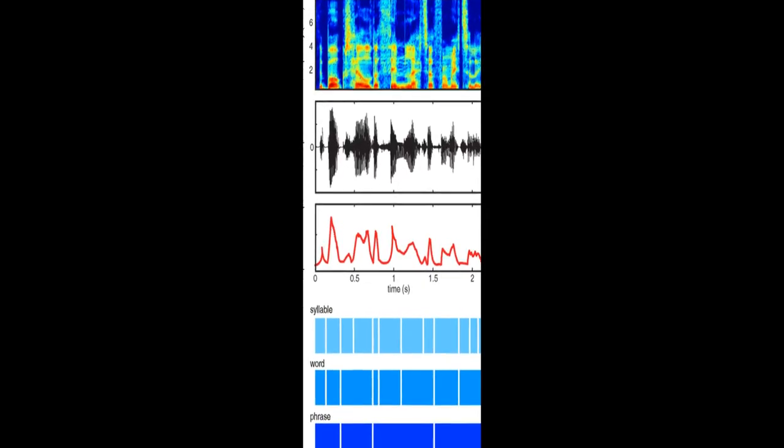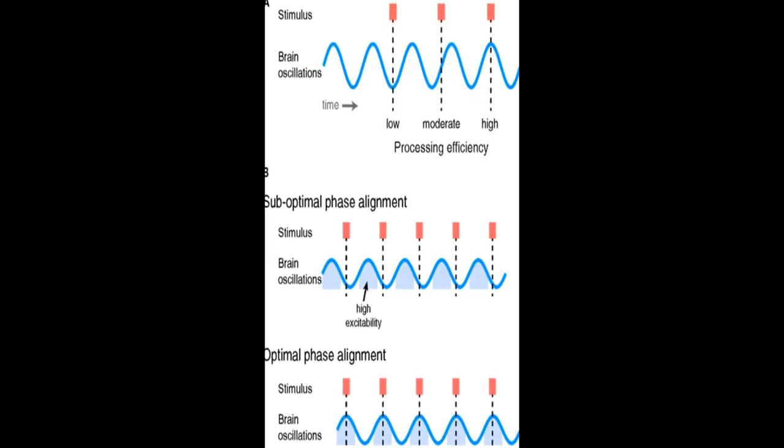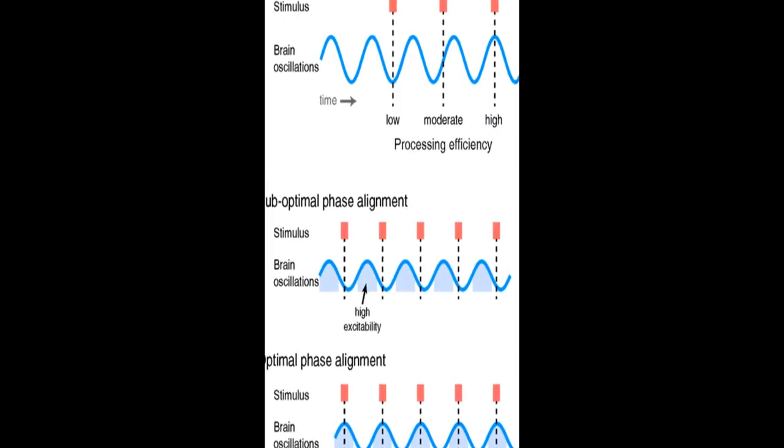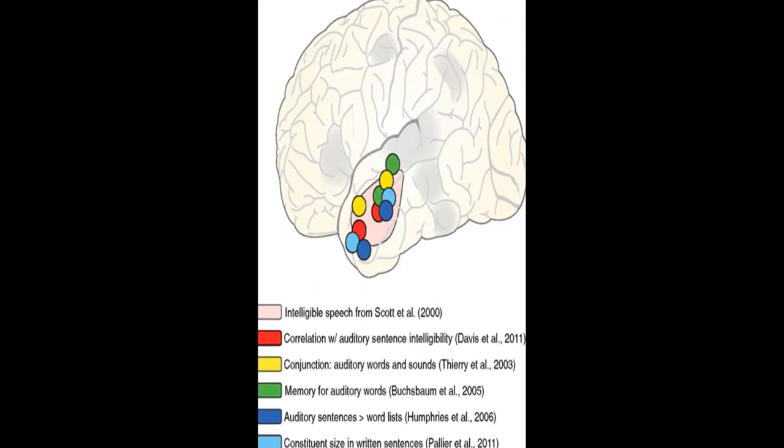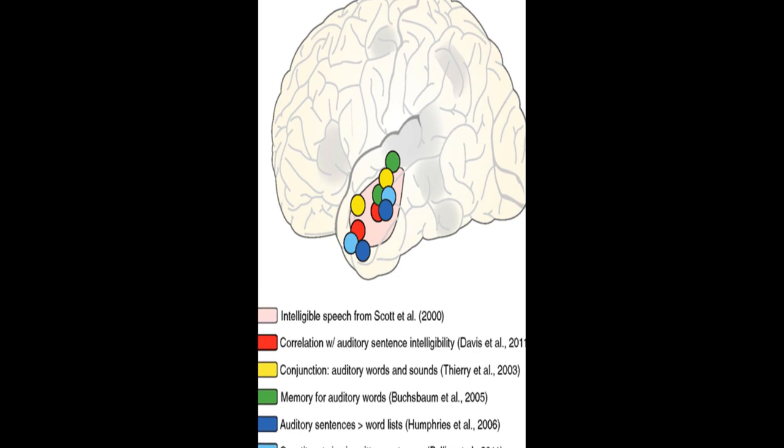Neuroimaging data shows that ongoing cortical oscillations phase lock to low frequency information, 4 to 8 Hz, in the speech envelope, which helps increase sensitivity to relevant acoustic cues.